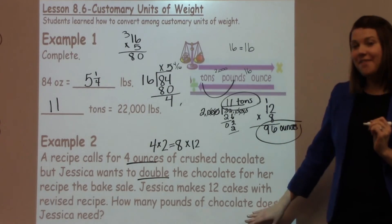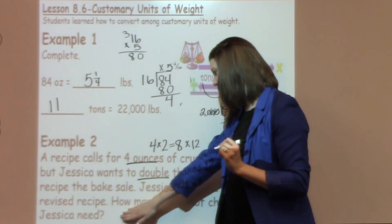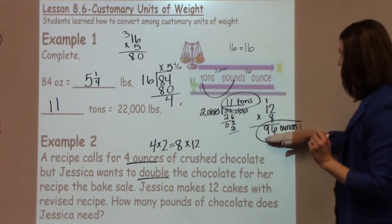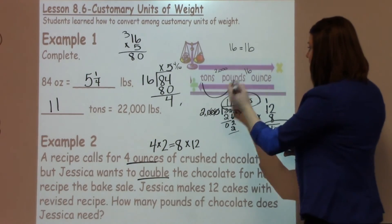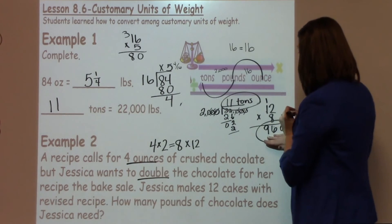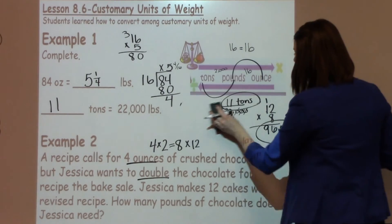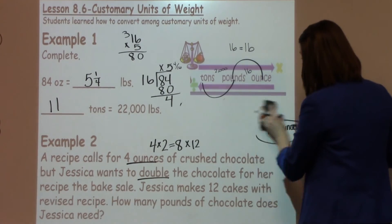Now, I'm not quite finished because it says how many pounds of chocolate does Jessica need. So I need to take my ounces and I need to convert it to pounds. So I'm going to go from ounces to pounds, which means I'm going to divide by 16. I'm going to go ahead and do some erasing over here so I've got a little bit more room to show my work.